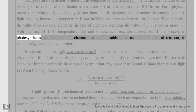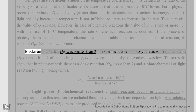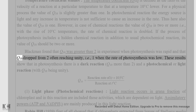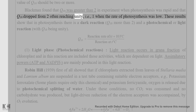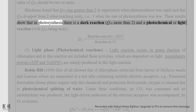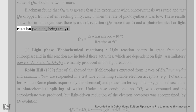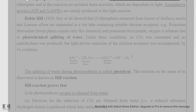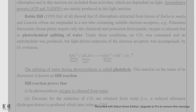If photosynthesis includes a hidden chemical reaction in addition to the usual photochemical reaction, its Q10 should be two or more. Blackman found that Q10 was greater than two when photosynthesis was rapid, and that Q10 dropped from two to often reaching unity (one) when the rate of photosynthesis was low. These results show that in photosynthesis there is a dark reaction (Q10 > 2) and a photochemical or light reaction (Q10 = 1).